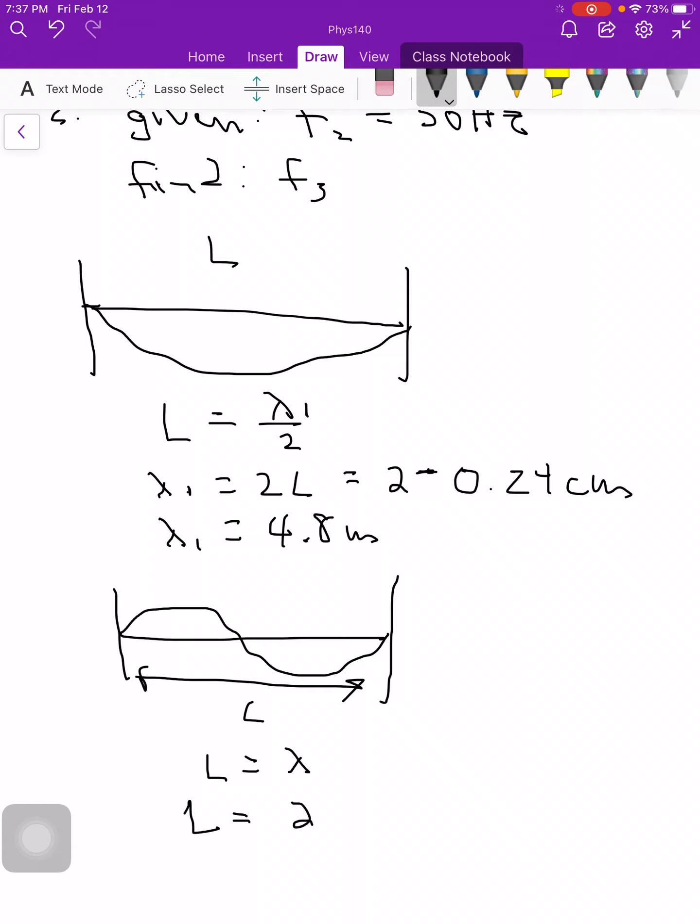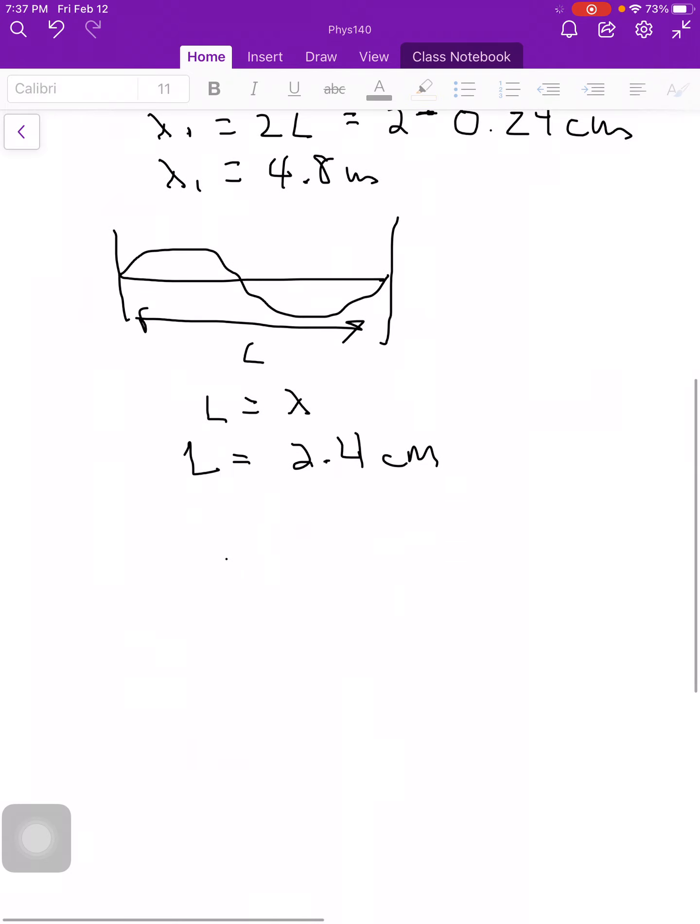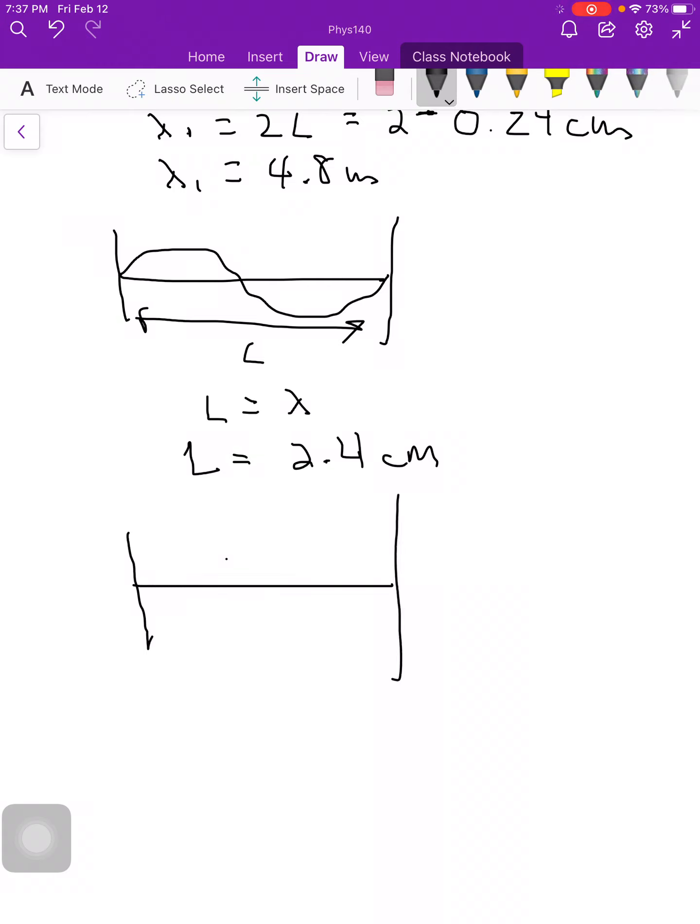And the next one we're going to have this case. Let's say this is going to be the wavelength we go to there. So now L is equal to 3 halves lambda, and so lambda is going to equal 2 thirds L.